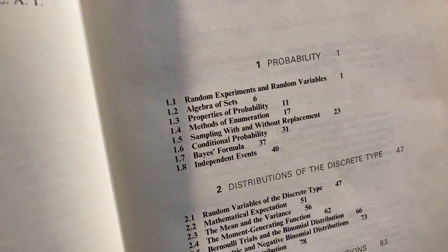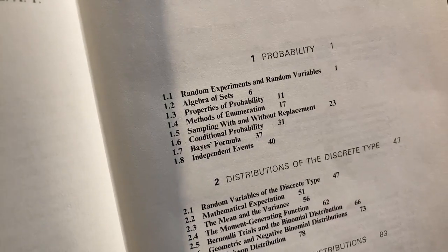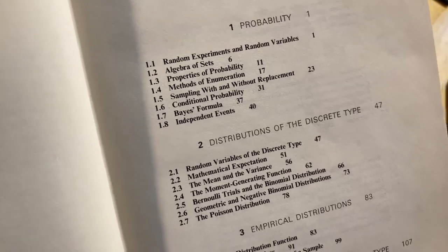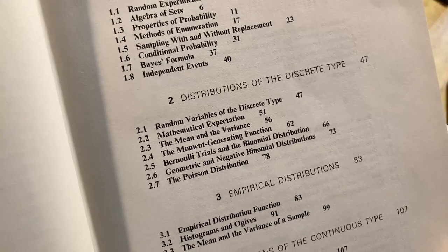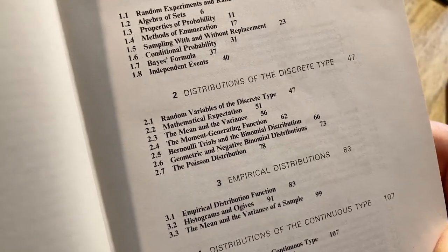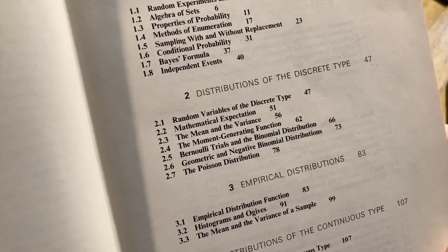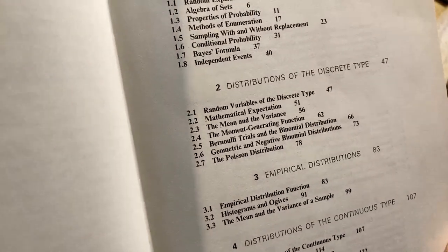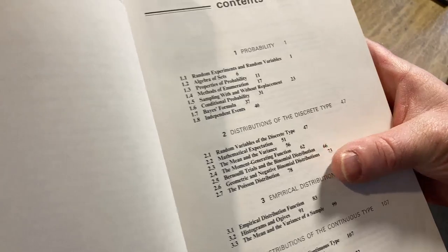It starts with probability, random experiments and random variables, algebra of sets, properties of probability. So it goes pretty quickly. Look at that, Bayes formula, independent events, and then distributions of the discrete type. Ah, the Poisson. I bet you don't know what Poisson means in French. It means fish, I'm pretty sure. Someone told me that, and I've never actually verified it, but I'm pretty sure Poisson means fish in French.